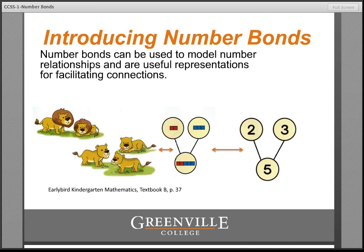Number bonds are used to illustrate a number relationship. An additive relationship, which describes both addition and subtraction, typically involves a whole or total which can be partitioned into two or more parts. So here the whole is five and the two parts are two and three. This image comes from a kindergarten textbook and shows how it starts with actual context and takes it towards more abstraction. The connections are so important that as you get to the final representation, you're still asking questions like, 'What does the numeral three represent?' — constantly asking them to make connections back to the familiar.